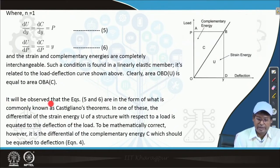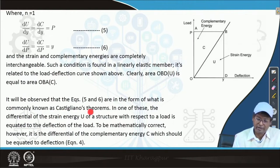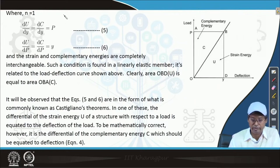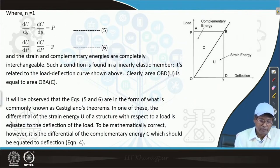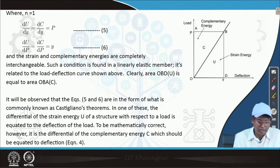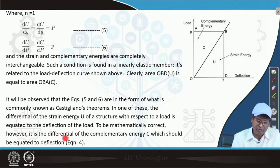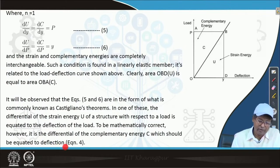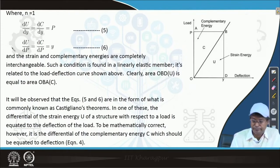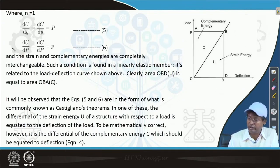It will be observed that equations 5 and 6 are in the form of what is commonly known as Castigliano's theorem. In one form, the differential of the strain energy U with respect to a load is equated to the deflection of the load. To be mathematically correct, however, it is the differentiation of the complementary energy C which should be equated to the deflection — this is more appropriate, as is clear from the equations in the previous discussion.